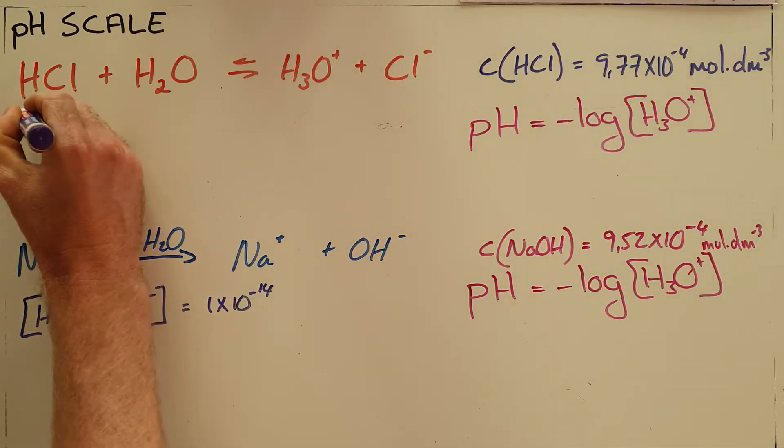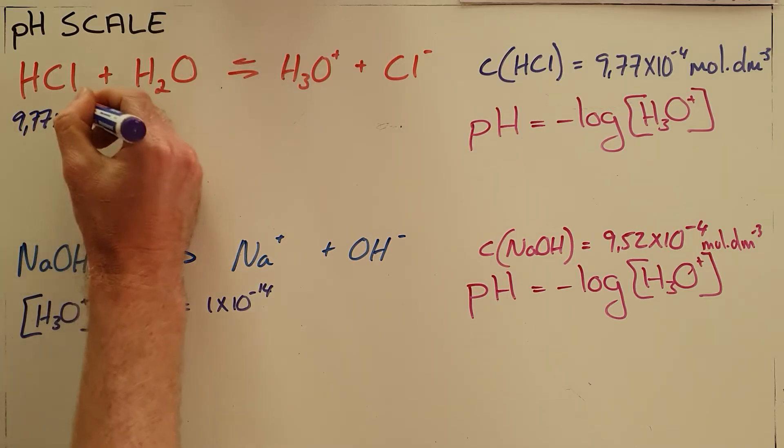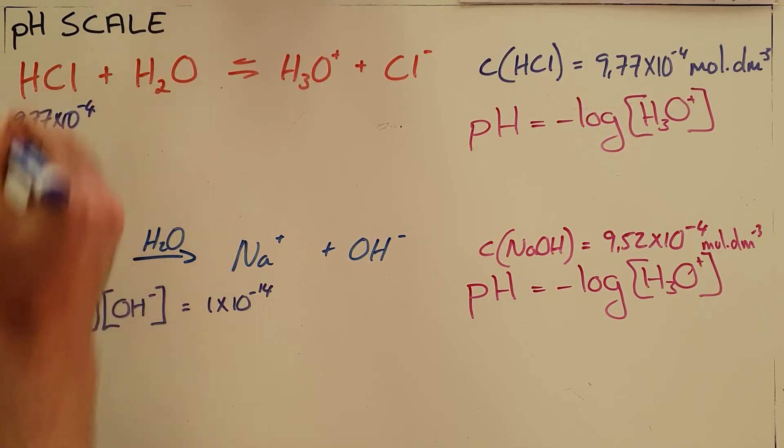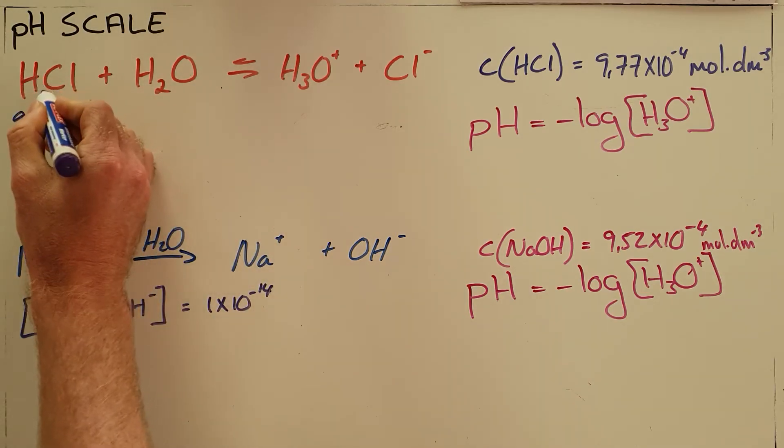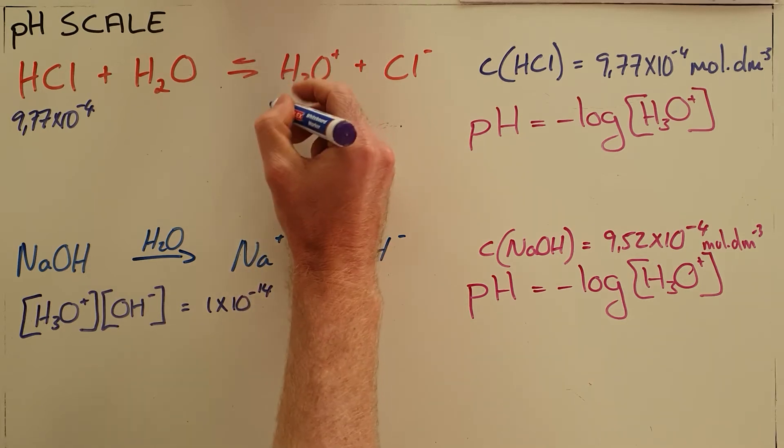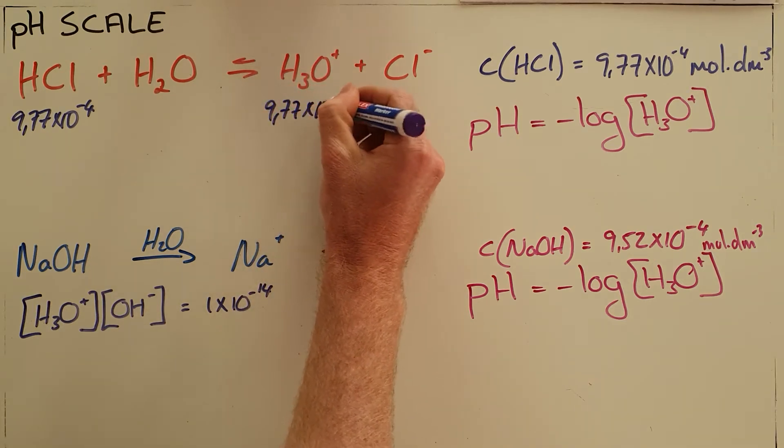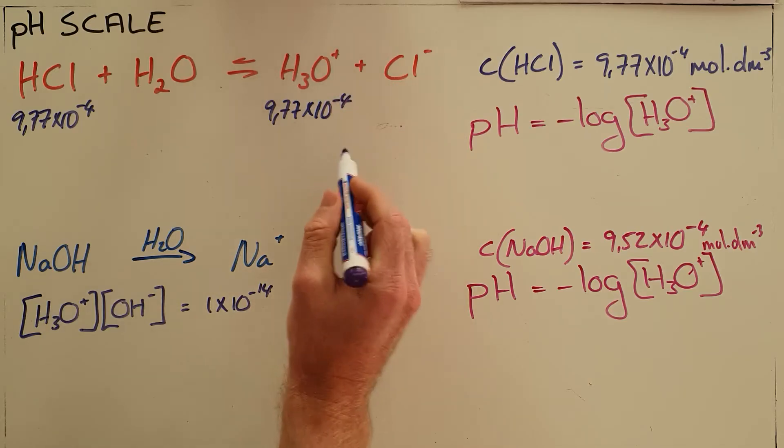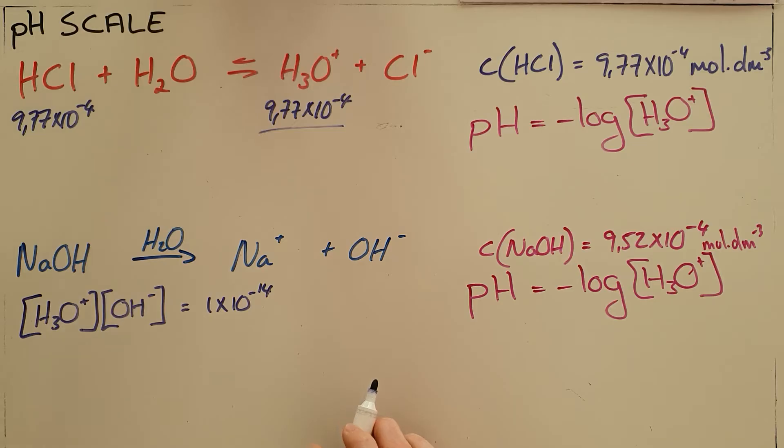Now since we know that strong acids are acids that dissociate completely in water and hydrochloric acid is a strong acid, that means that since the ratio of hydrochloric acid to hydronium is one to one, there must be 9.77 times 10 to the minus 4 moles per cubic decimeter of hydronium present in the solution.